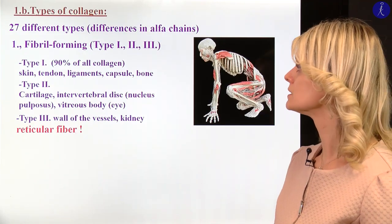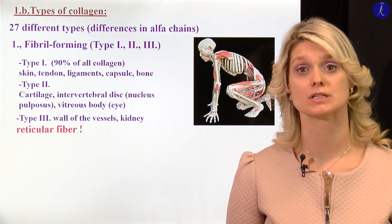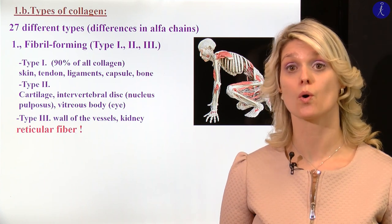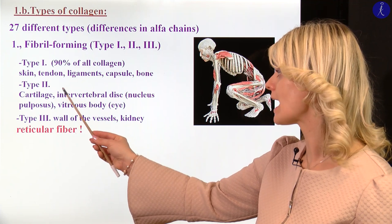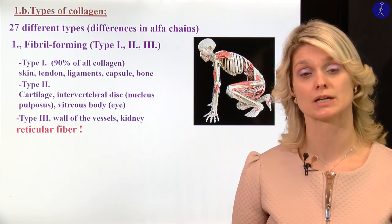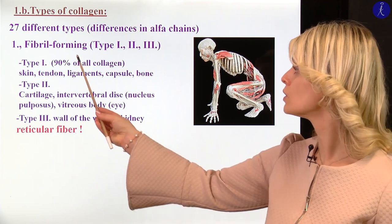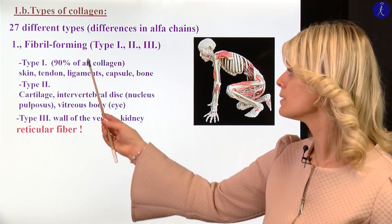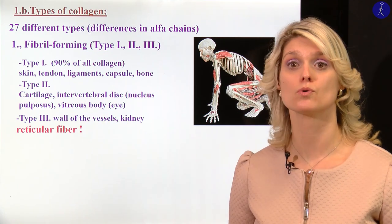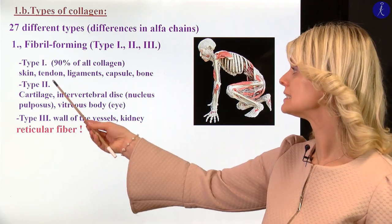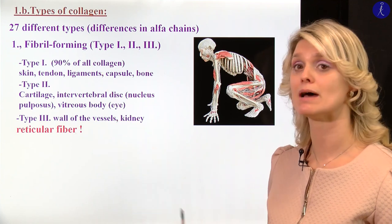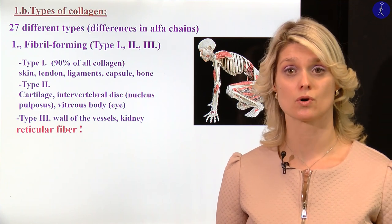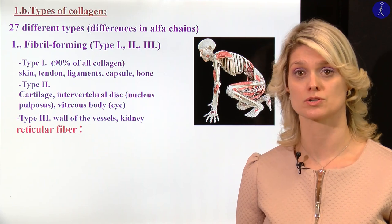We can talk about 27 different types of collagen fibers; of course it is not necessary to know all of them, but we have to know some important ones. Within the group of fibril-forming collagen fibers, type 1 forms 90% of all collagen fibers. We can find it in the skin, tendons, ligaments, capsules, and bone. So 90% of all collagen fibers are type 1.